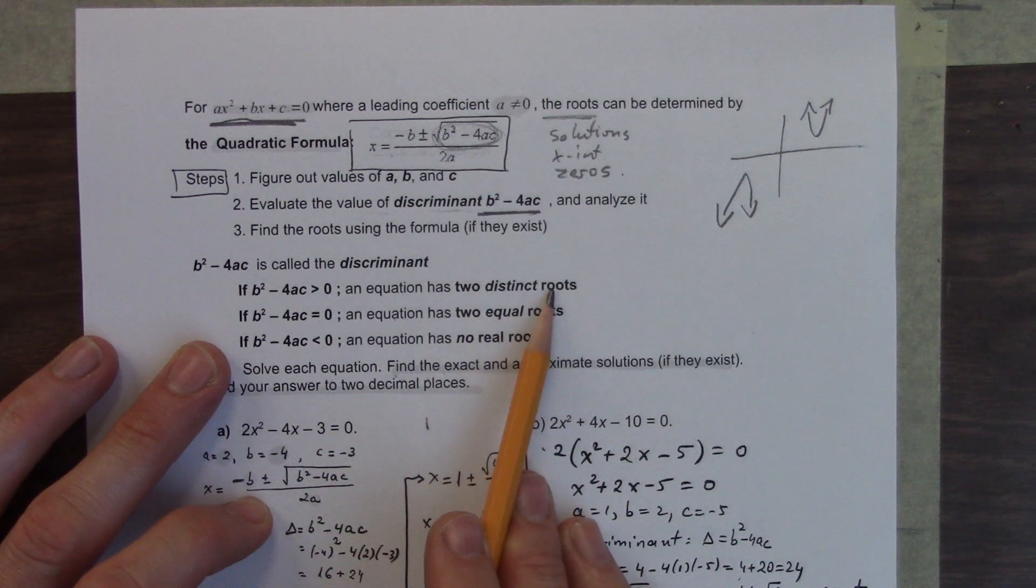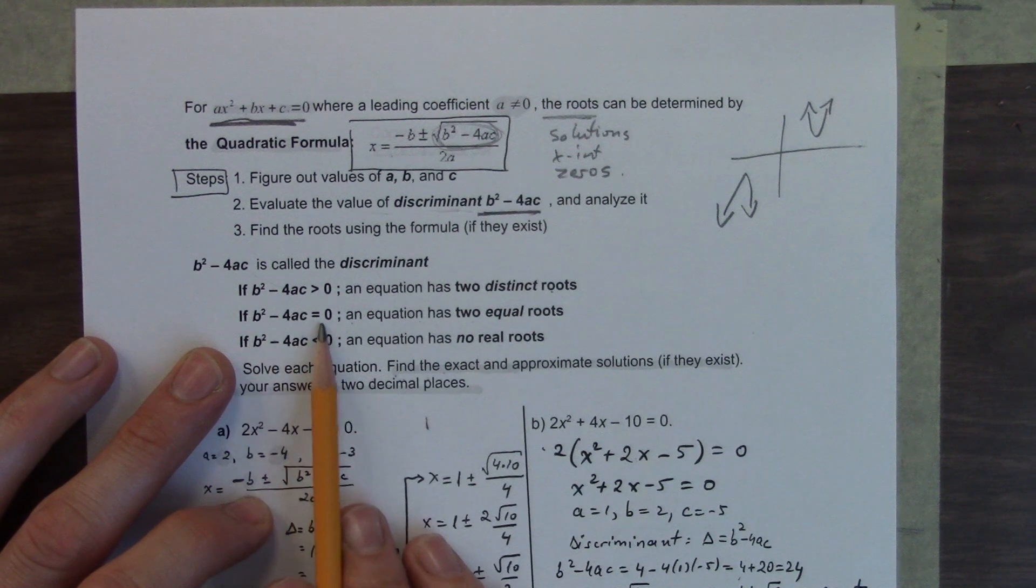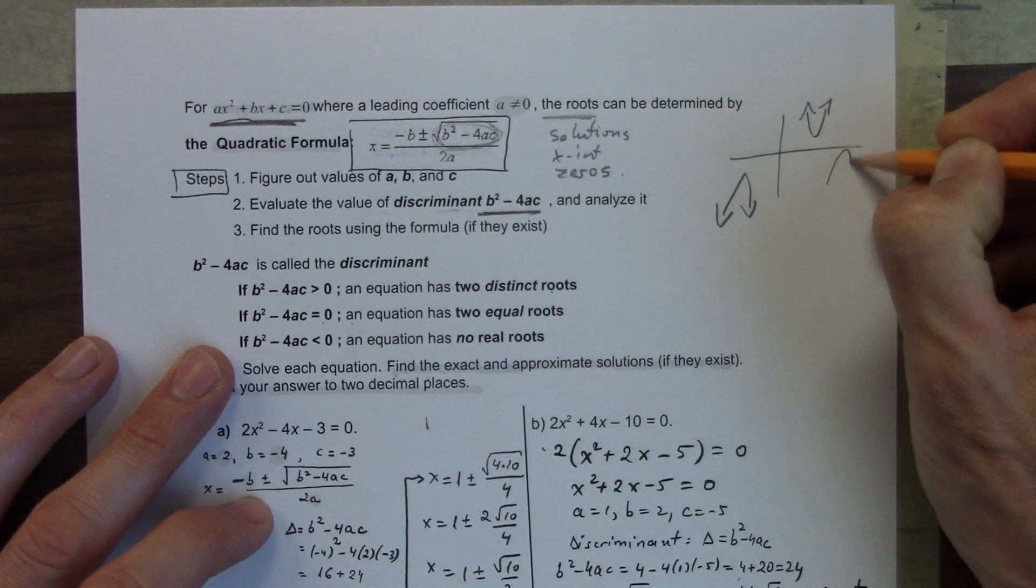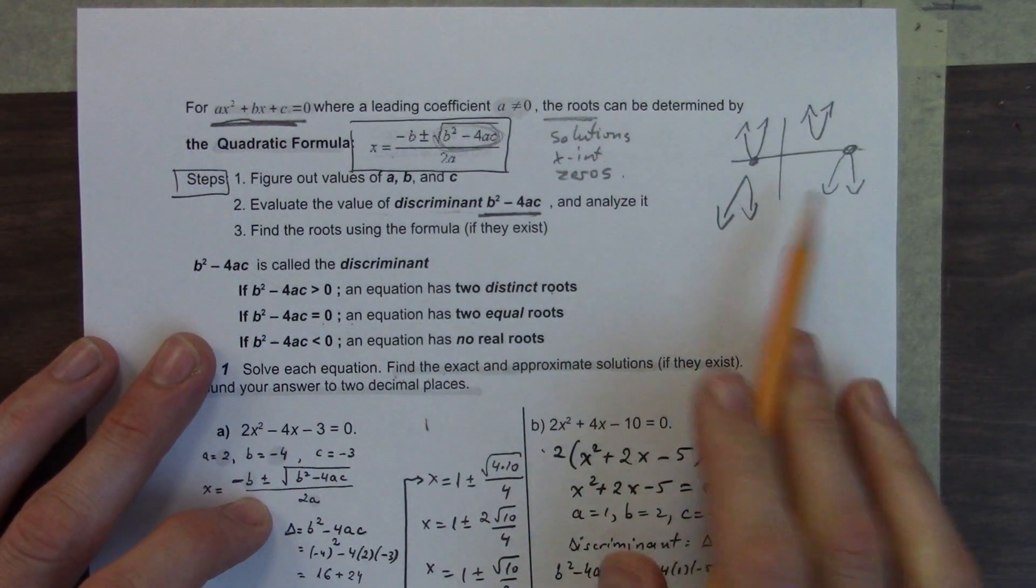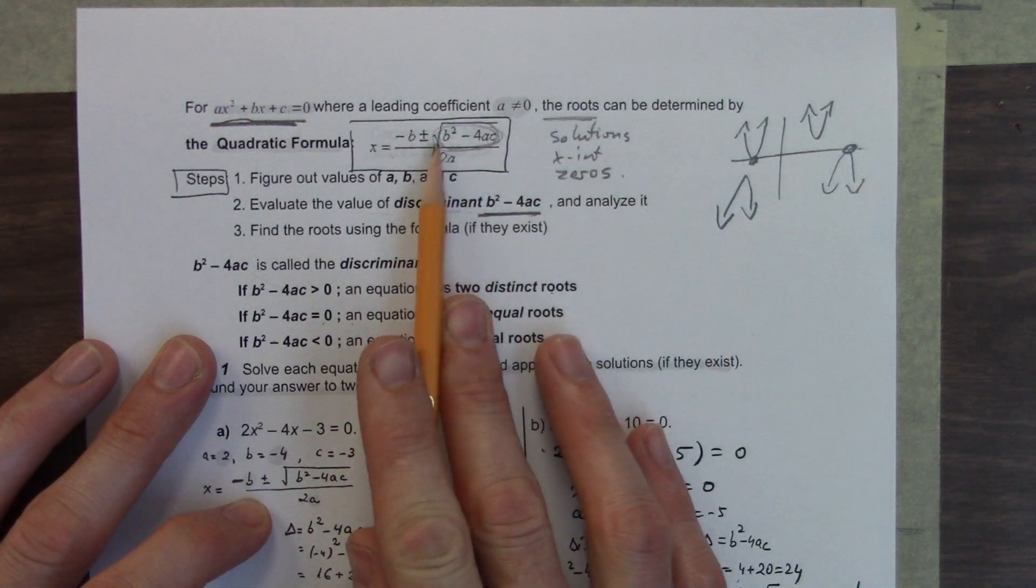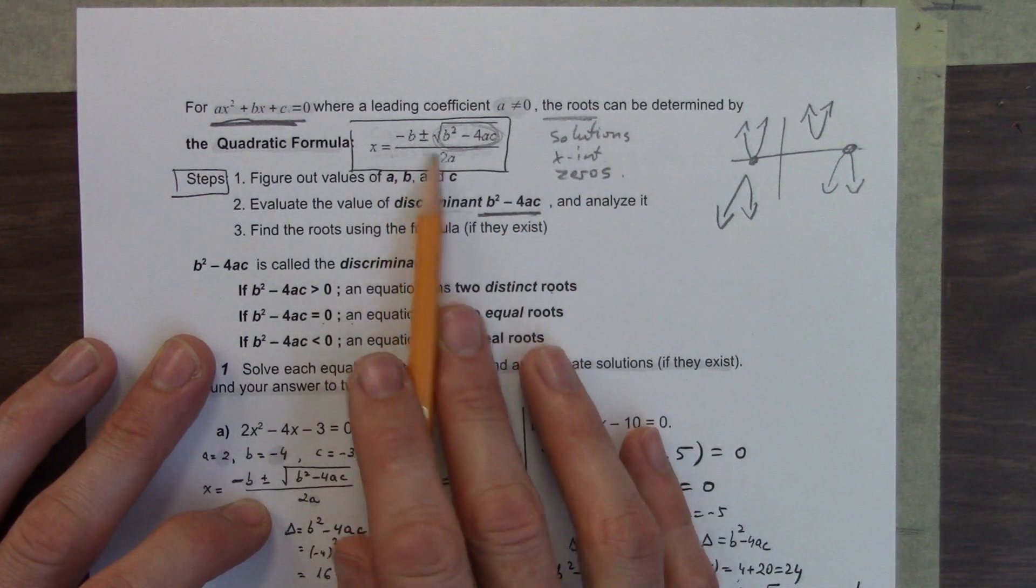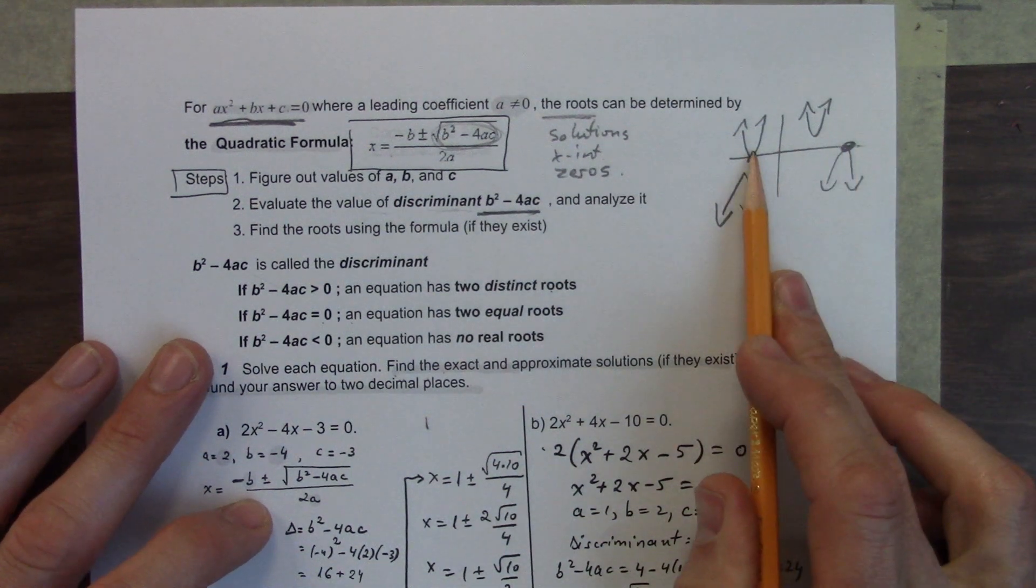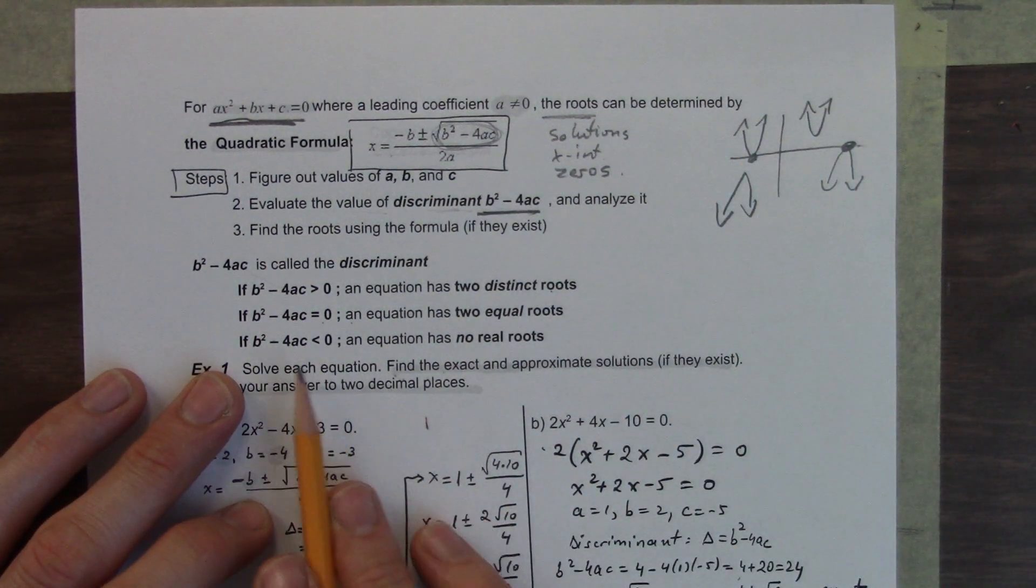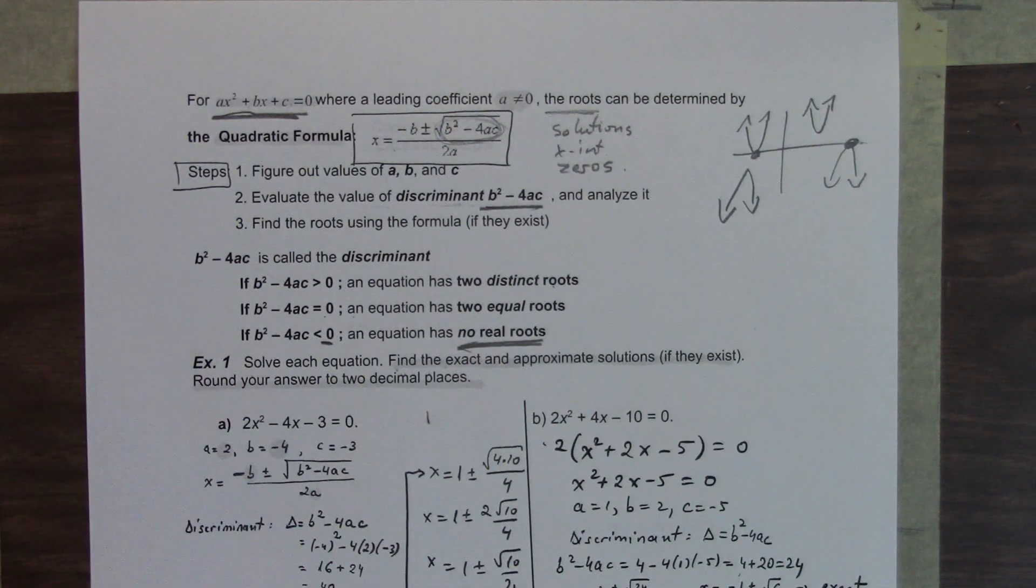So the discriminant, b squared minus 4ac: if it's greater than 0, it has two distinct roots. If it's equal to 0, that is where the vertex is right on the x-axis. You get rid of the plus or minus then, because plus or minus 0 is still 0. And you're just left with negative b over 2a. And finally, if it is less than 0, negative, it has no real roots. So it does not cross the x-axis at all.